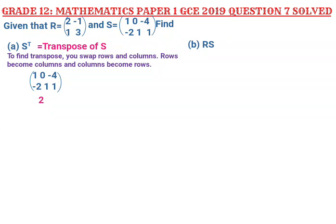To find the transpose, you swap rows and columns — rows become columns and columns become rows. The matrix S given in the question is: 1, 0, negative 4, negative 2, 1, 1.